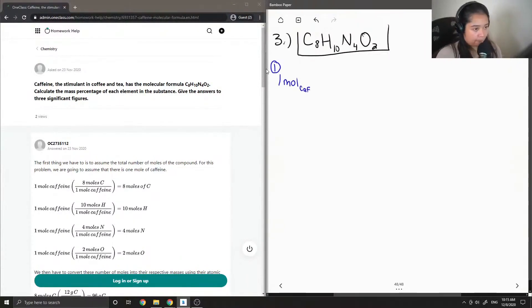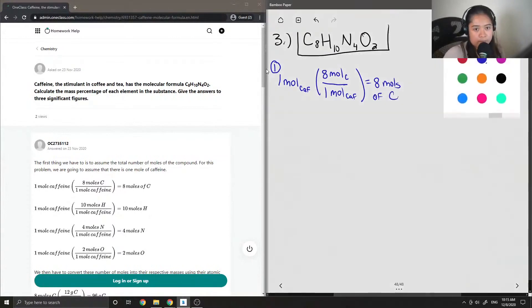I can show that we have eight moles of carbon in one mole of caffeine, so we can multiply this by eight to get eight moles of carbon. And then I'm just going to add here, assume one mole of caffeine.